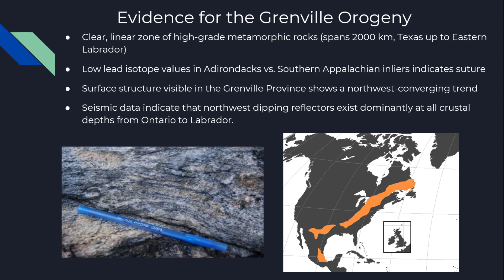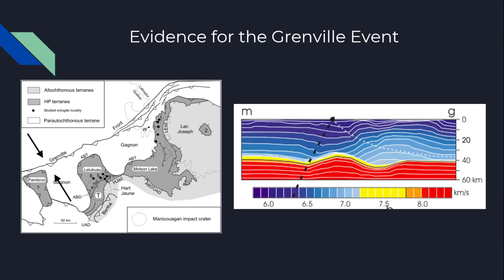There are different subsurface structures in the Grenville Orogeny which show a northwest converging trend, primarily due to different shear zones and northwest-dipping reflections. Evidence from geophysical models is seen within seismic data — looking at the gravitational constants, we can see a northwest thickening in the crust, with a thickening at one point and then a thinning, consistent with northwest convergence. This seismic data shows different crustal depths dominated along the border of the convergent zone.